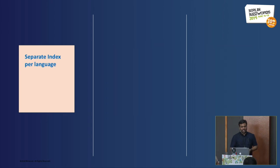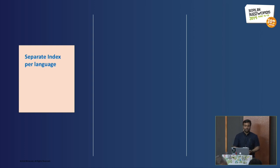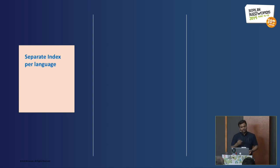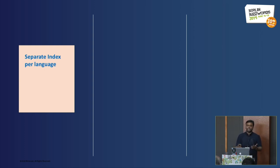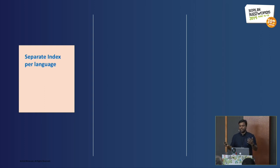The first approach is a separate index per language. When a new language needs to be supported, you create a new index and start storing documents in that language. This provides a clearer structure, since every language has its own index. It also doesn't mix up term frequencies, since every document is in its own dataset. And it gives better handling for queries targeting a particular language.